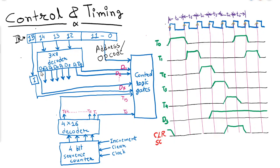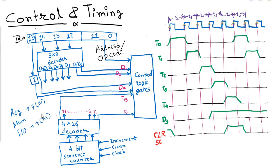Based on this bit, we get the output to find out which is the register reference instruction, which is the memory reference instruction, and which is the IO reference instruction. When we discussed instructions, we saw that the opcode value is 7 (i.e., 1 1 1) for register reference as well as IO — in both cases it is 1 1 1. For memory reference instructions, it ranges from 0 to 6.